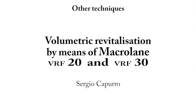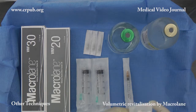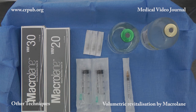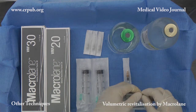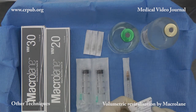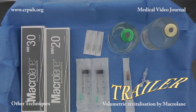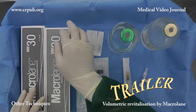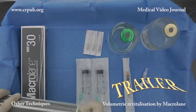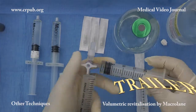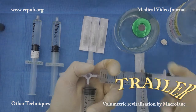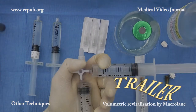Volumetric revitalization by means of Macrolaine VRF20 and VRF30. Revitalization of the skin and subcutaneous tissues is carried out by means of cross-linked hyaluronic acid. As non-cross-linked hyaluronic acid spreads very easily, it does not exert a local revitalizing effect, but disperses very rapidly in the organism.